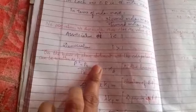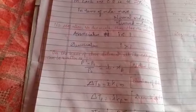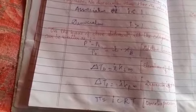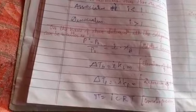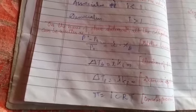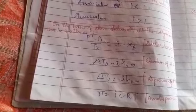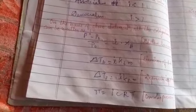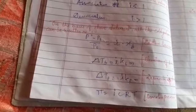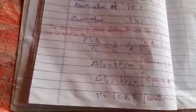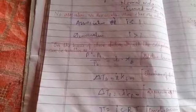Without using 'i' you can easily calculate the molar mass of any solute in different colligative property problems. But if association or dissociation is asked about in the question, you have to make those changes and introduce the Van't Hoff factor 'i' into the respective colligative property formula.